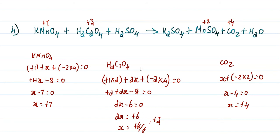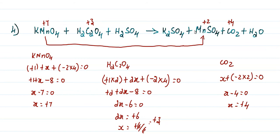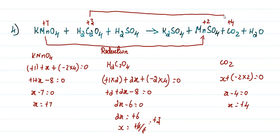Manganese goes from plus 7 state, converted to plus 2 state. Plus 7 has 7 electrons, and now there are 2 electrons, so it accepts 5 electrons. Gaining of electrons is known as reduction reaction, so this is a reduction reaction. Next, carbon is plus 3 state, goes to plus 4 state. One more electron is removed, so it is the oxidation reaction. Both oxidation and reduction are here.